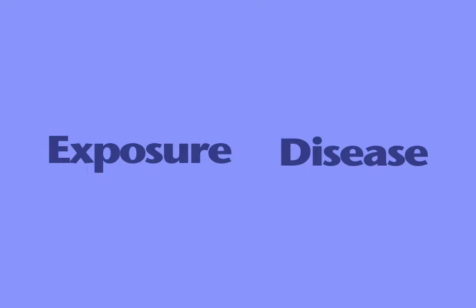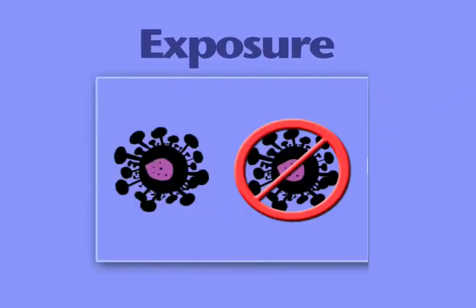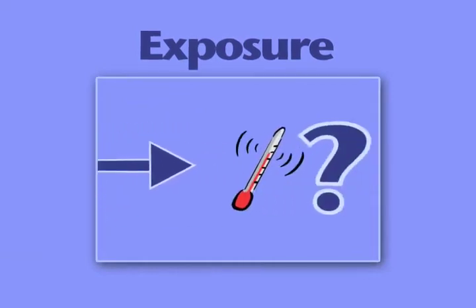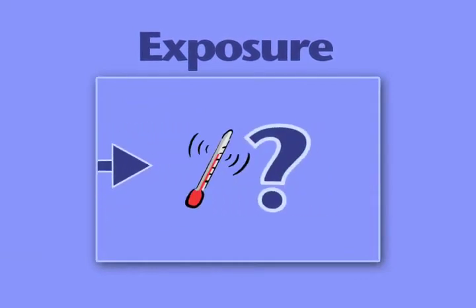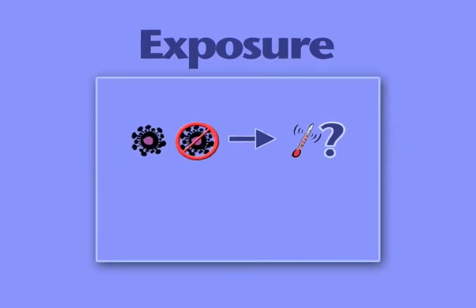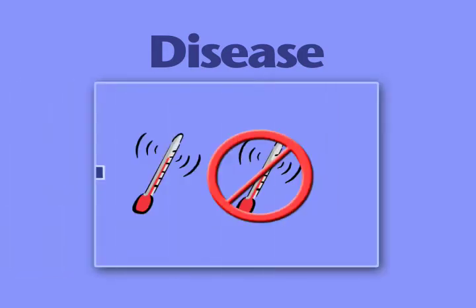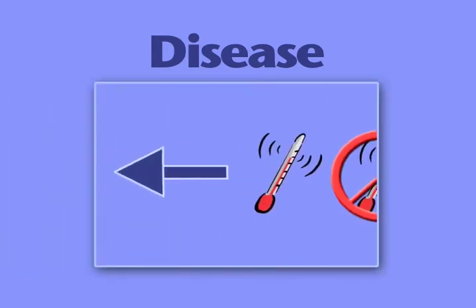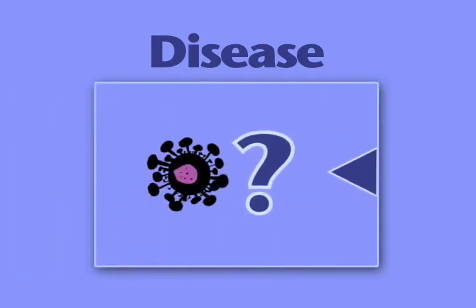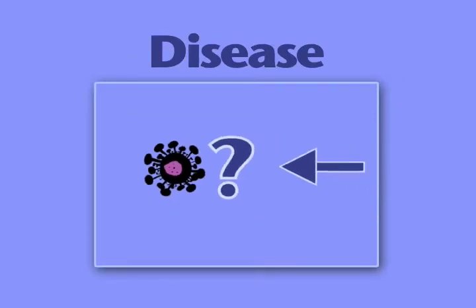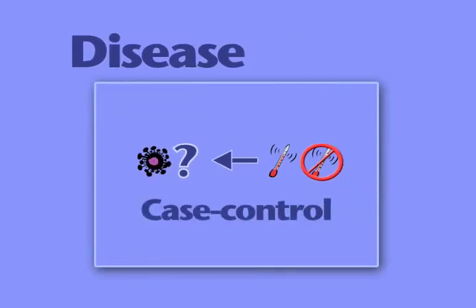When our study population, including our comparison group, is defined by exposure and non-exposure, and we then determine whether the subjects develop the disease over the follow-up time, the study is a cohort study. When the study population is defined by disease — that is, we find persons who have the disease and persons who don't — and we then determine the exposure for each subject, then the study is a case-control study.